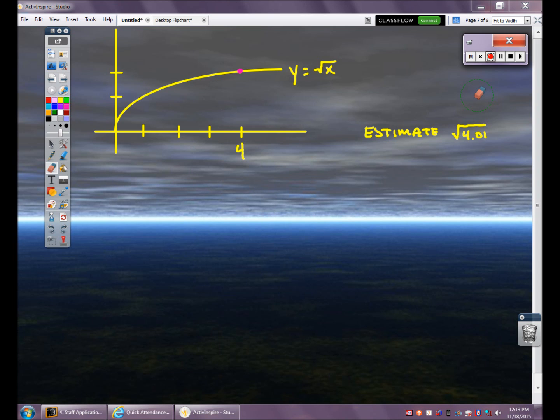In front of you is the equation y equals root x in its graphical representation. I want to try to estimate the square root of 4.01. I'm not going to do this with a calculator. I want to use calculus. Yes, I could just type that into the calculator, square root of 4.01, and get an answer. I don't want to do that. I want to use a technique called local linearization.